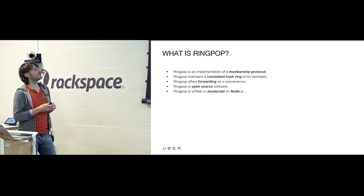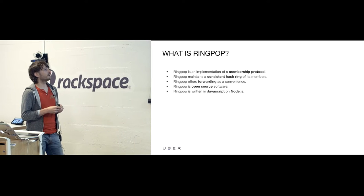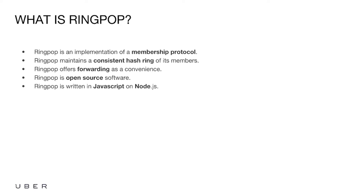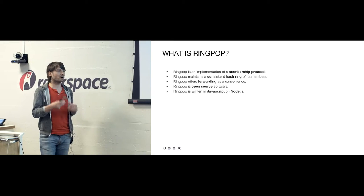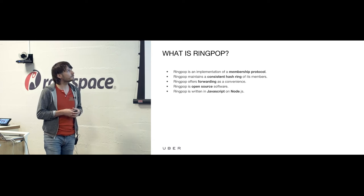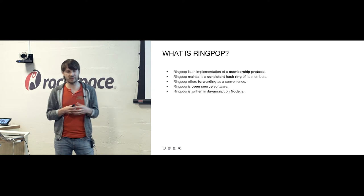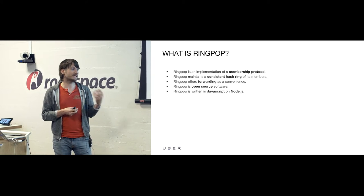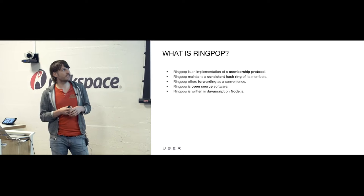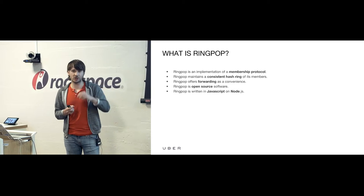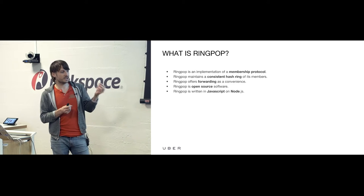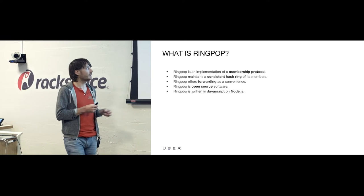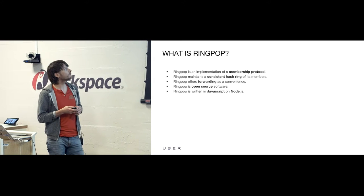The top three foundational elements of RingPop are: first, it is an implementation of a membership protocol, which allows an application to know about all of the other members within that application cluster. It also maintains a consistent hash ring — once members join or leave the cluster, we add that information into the consistent hash ring and hash the instance addresses along that ring, giving a particular part of the key space over to that instance for the time that it is alive and operating.